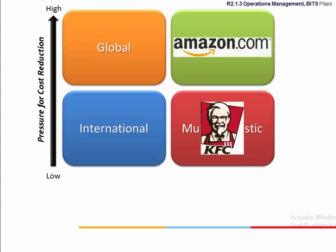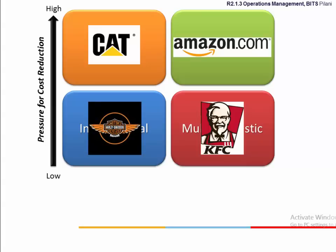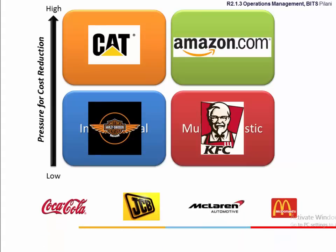KFC, Amazon.com, Caterpillar, and Harley-Davidson are the respective examples of the four strategies. Watch the videos of Coca-Cola, JCB, McLaren, and McDonald's, and identify their global strategies.